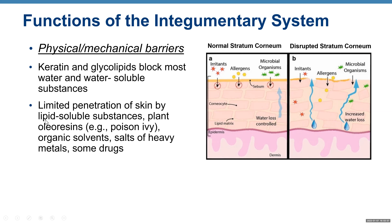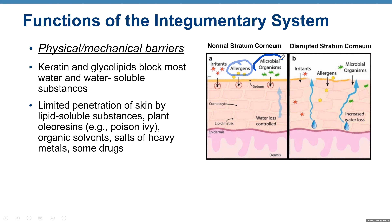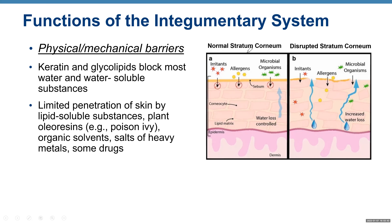The skin allows lipid-soluble molecules to penetrate it, but only with limited penetration. On this diagram you can see healthy skin and different irritants, allergens, and microbial organisms that cannot enter your body. But when you have a disrupted layer of the skin, you have passages that allow those chemicals and bacteria to enter your body, and also allow water to leave your body, which can cause dehydration.